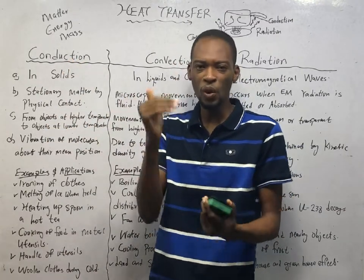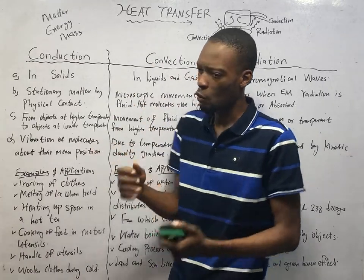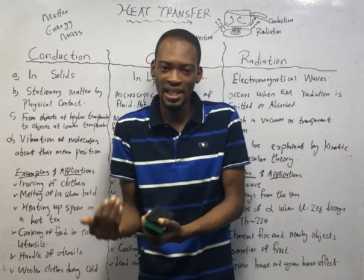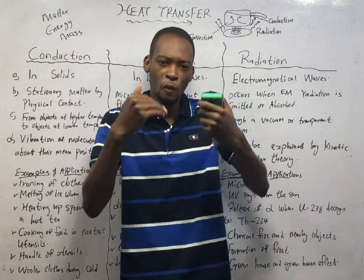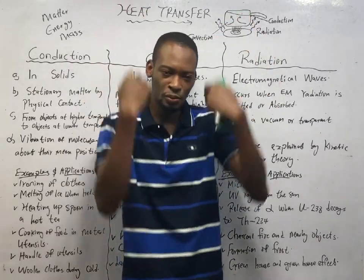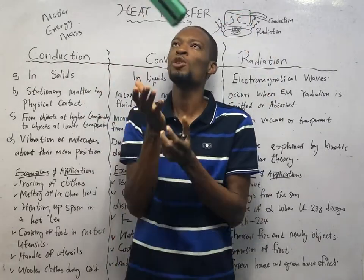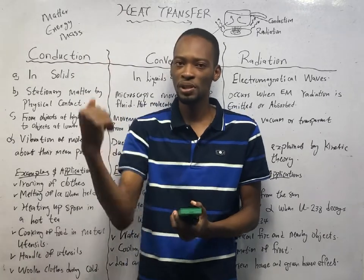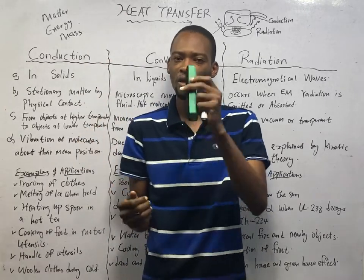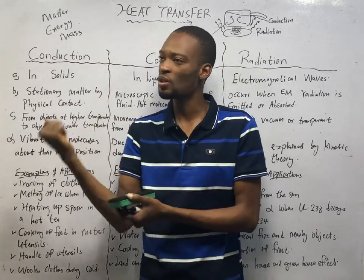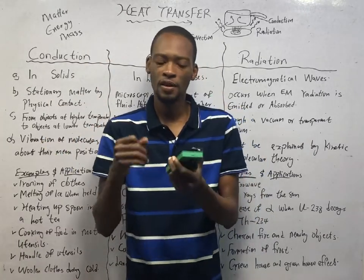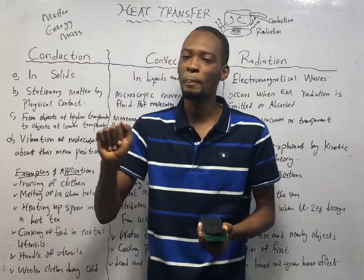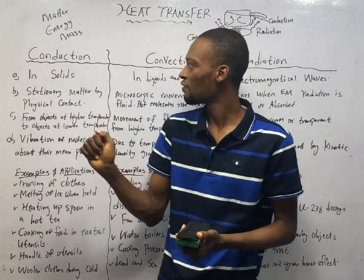Remember, matter is anything that has mass and occupies space — not weight, because weight is different from mass. Mass is the quantity of matter in a body or an object, while weight is the Earth's pull on a body. Anything that goes up certainly comes down because gravity is acting on the body, and when gravity acts on a body of mass, we say weight is occurring. Weight is mass times gravity.